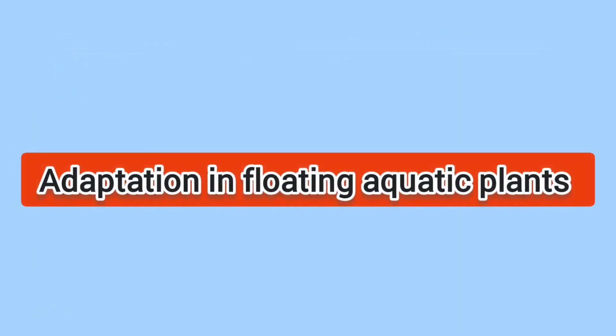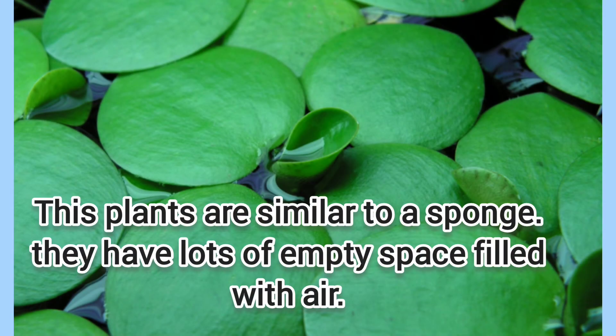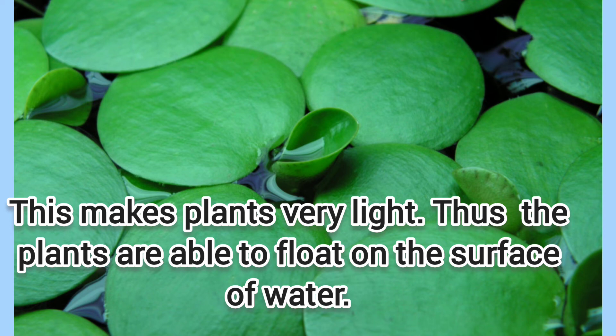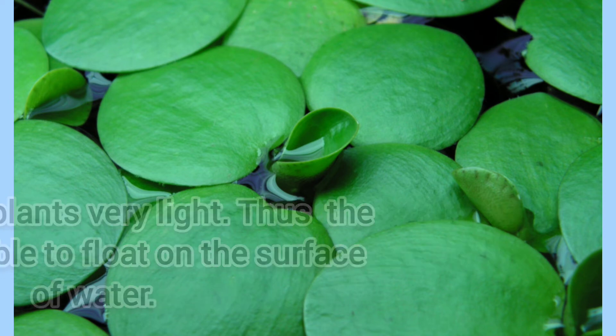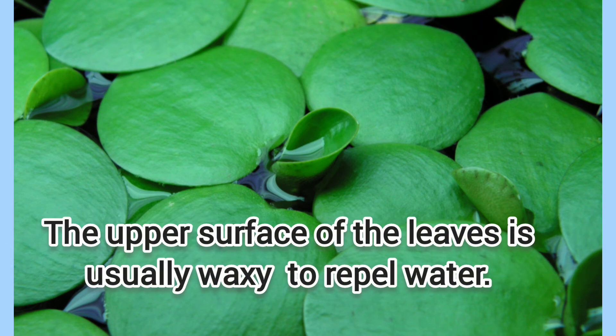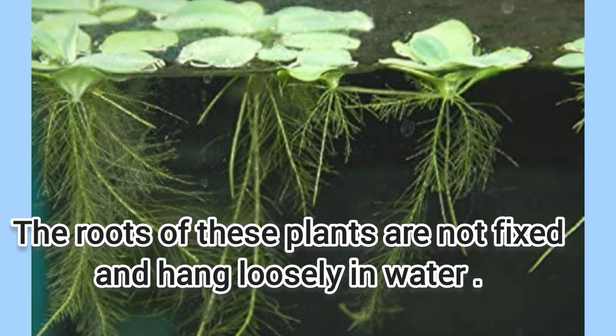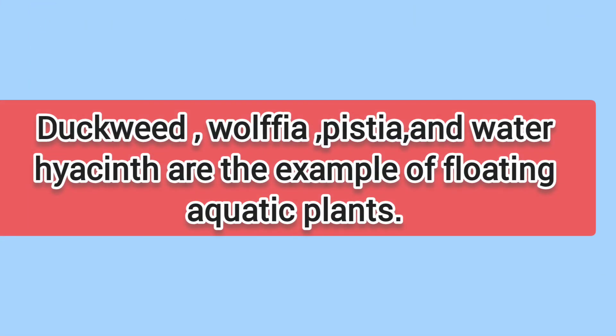Adaptation in floating plants: These plants are similar to a sponge. They have lots of empty spaces filled with air, which makes them very light, allowing the plants to float on the surface of water. The upper surface of the leaves is usually waxy to repel water. The roots of these plants are not fixed and hang loosely in water. Duckweed, Wolffia, Pistia, and Water Hyacinth are examples of floating plants.